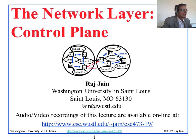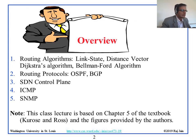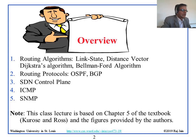Today we are going to talk about the Network Layer Control Plane, which is Chapter 5. We will cover routing algorithms — how we calculate the route from any point in the world to any other point. First, we talk about two algorithms called Dijkstra and Bellman-Ford, which use Link State and Distance Vector technology. Then we talk about two protocols that use them: OSPF and BGP. We also discuss SDN a bit more, and then ICMP and SNMP, which are management protocols included in this chapter.